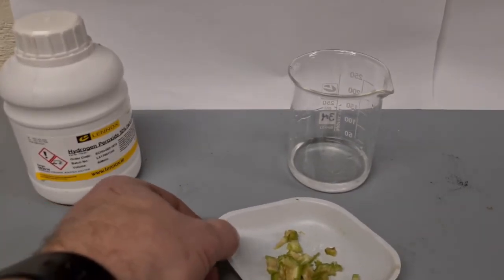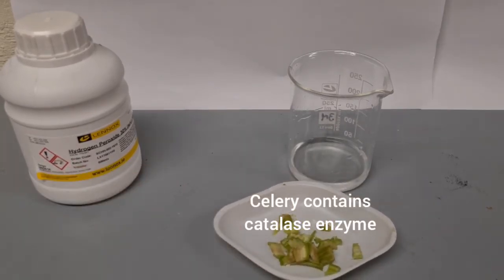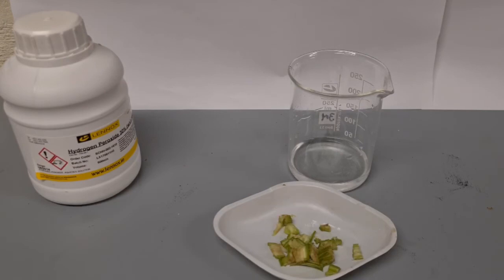We're going to use chopped up celery. It produces an enzyme called catalase which speeds up the breakdown of hydrogen peroxide as well.